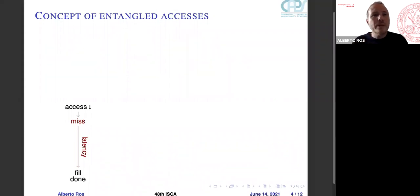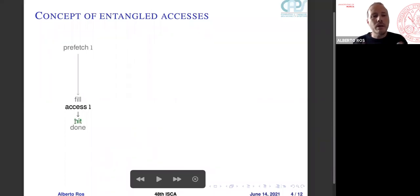So let's explain now the concept of entangled accesses. The core is going to request instruction L, so access L1, and it misses in the cache, and it takes some latency until the cache line is filled in the L1 cache and the access is done. We compute this latency. We go back in time, and we know when we should prefetch L. But the question here is, we prefetch L such that the miss becomes a hit. But the question here is, when do we prefetch L if the access will happen after?